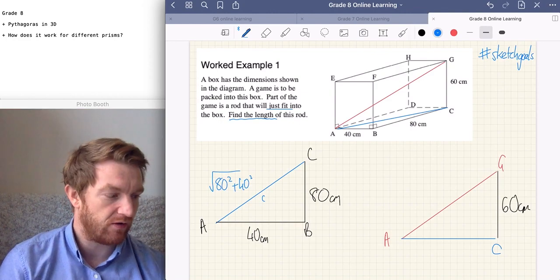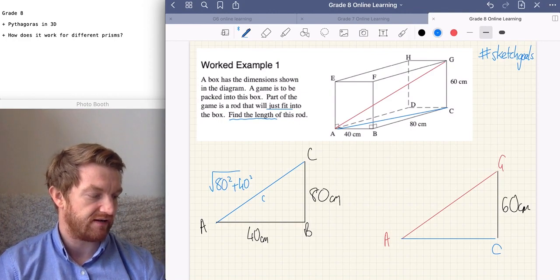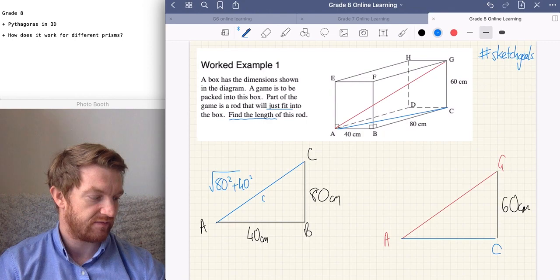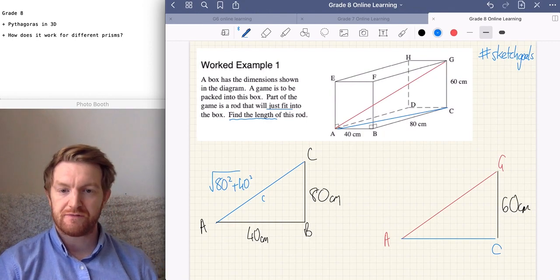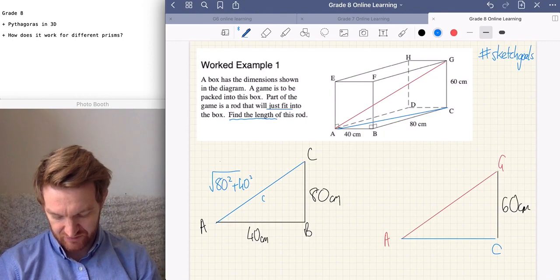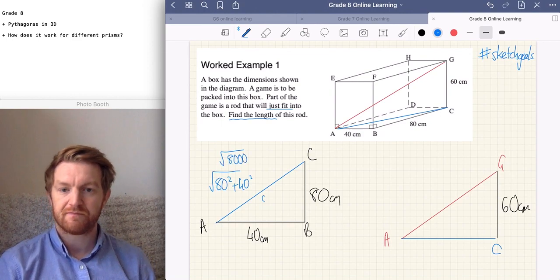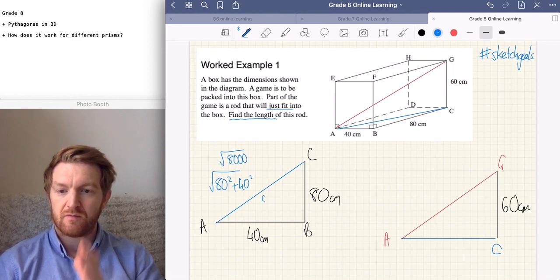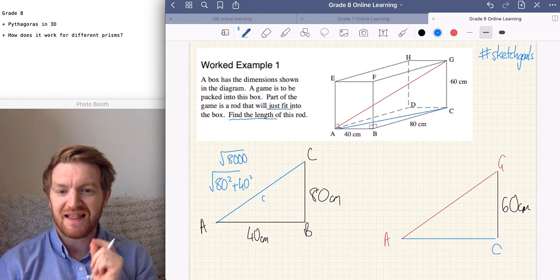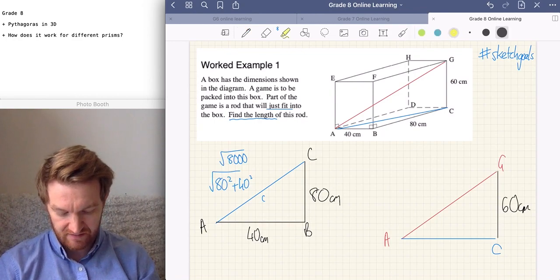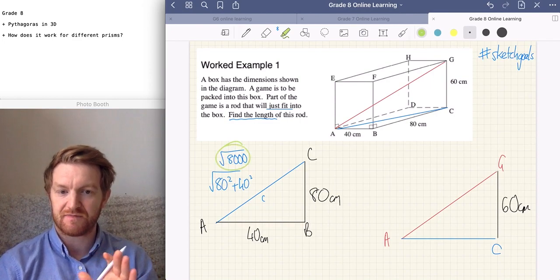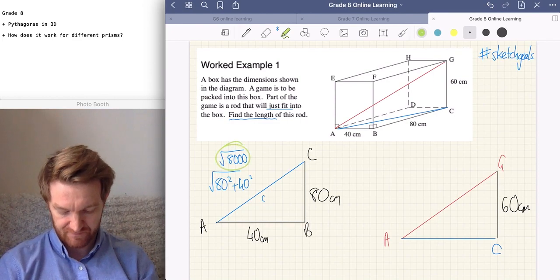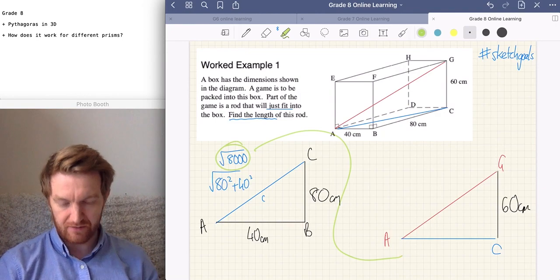And when we do that on our calculator, and I did write down the value here a second ago, let's hope I kept it. If you do 40 squared and 80 squared, it actually gives you the square root of 8,000. Now, we could simplify that. We could write it as a decimal. But I'm going to leave it as just the square root of 8,000. You're going to see why in a moment. We're just going to leave it as it is, because that's going to be part of our working out. And we're just going to bring that down to here. We're going to use it here.